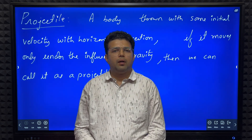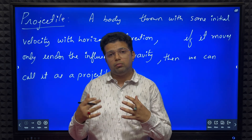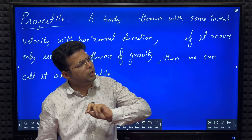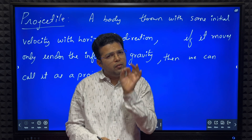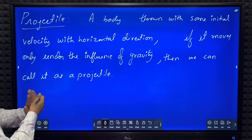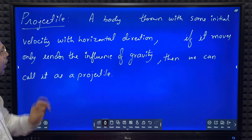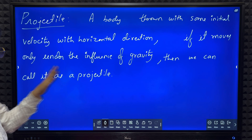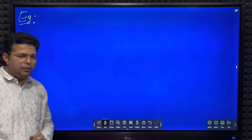After studying vectors and resolution of vectors, we are now eligible to learn projectile motion. A projectile is a body thrown with some initial velocity in the horizontal direction that moves only under the influence of gravity after that.